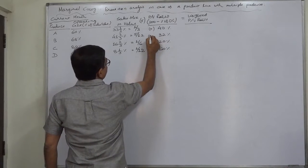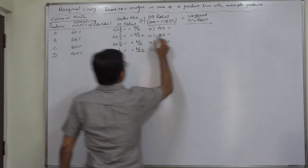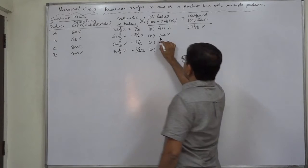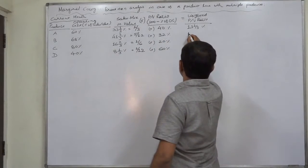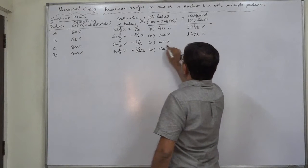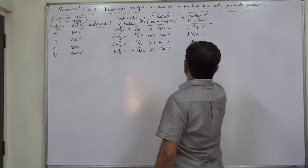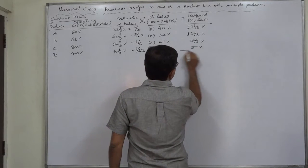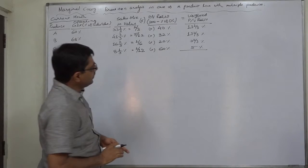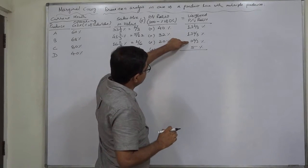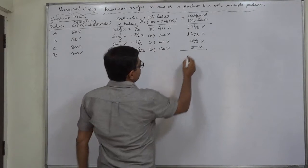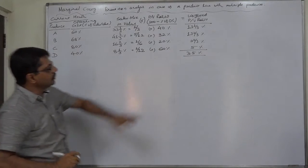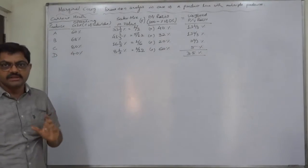So now we can calculate weighted PV ratio by multiplying these two. 1/3 of 40% is 13 and 1/3%. 5 by 12 and 32% is 13 and 1/3%. 1 by 6 and 20% is 3 and 1/3%. And 1 by 12 and 60% is 5%. If we add these all, 13 plus 13 is 26, 34 and 1/3, ultimately it comes to 35%. The weighted PV ratio comes to 35%.